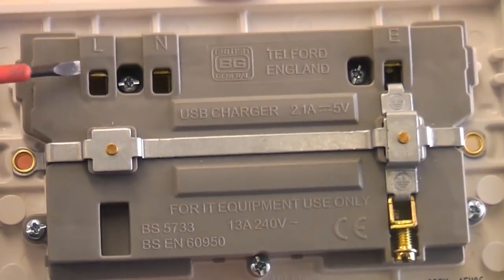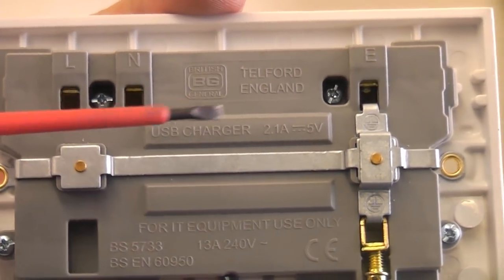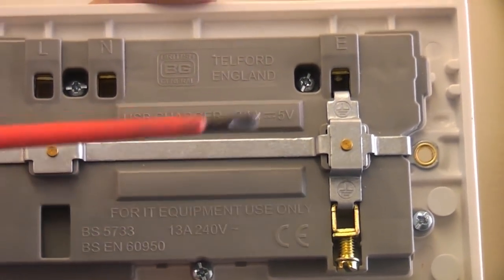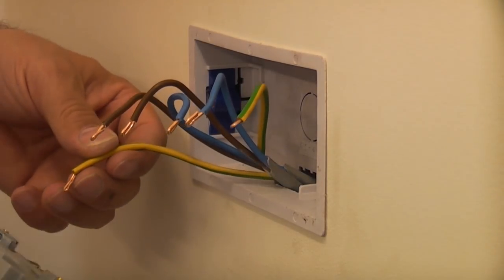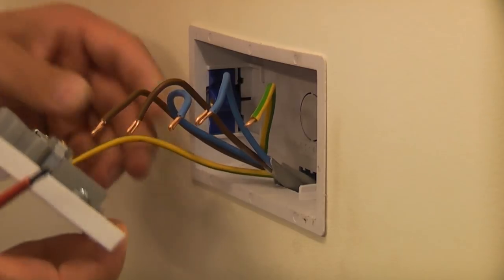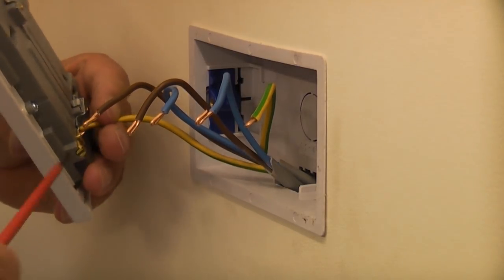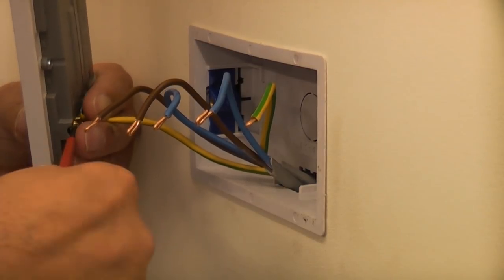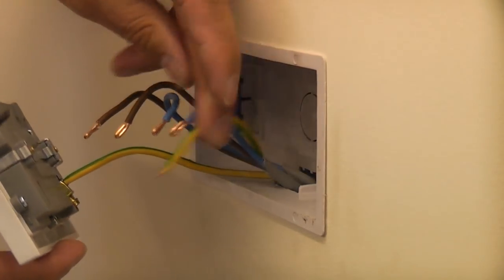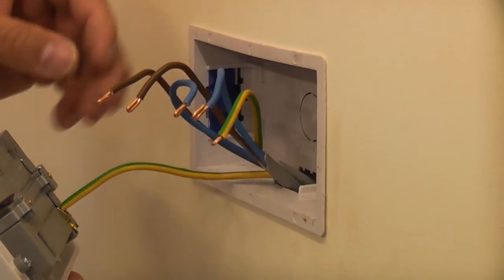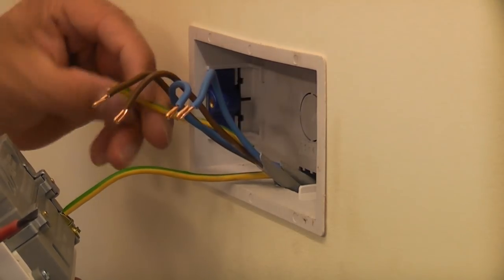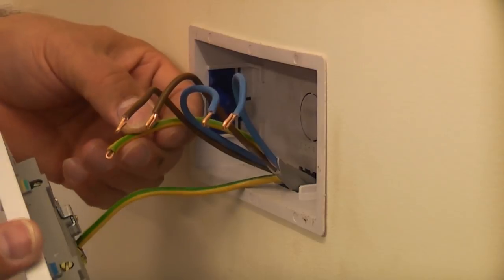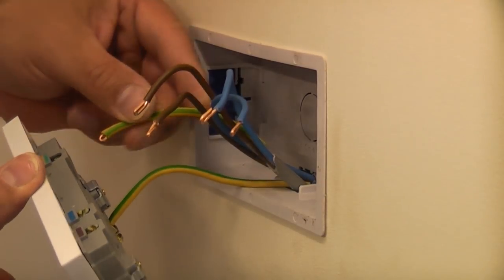This is quite simple. We only have the live, the neutral, and the two earth terminals to replace the wires in. I'm going to start off by connecting up the earth wire. I'll put that in the bottom there, and then I'll connect the other earth wire to the top.